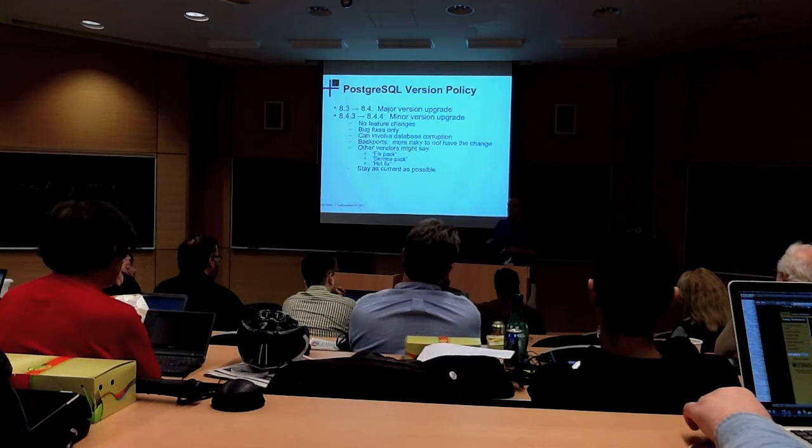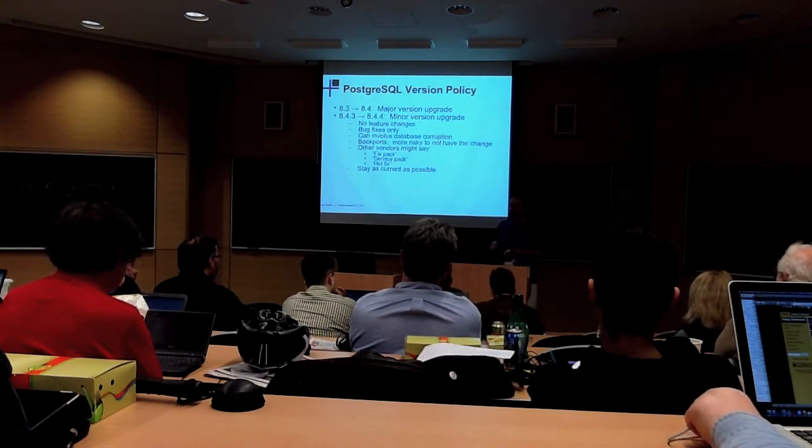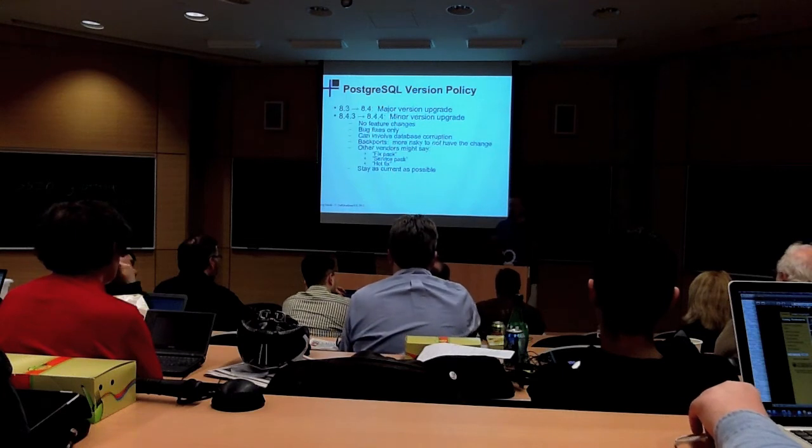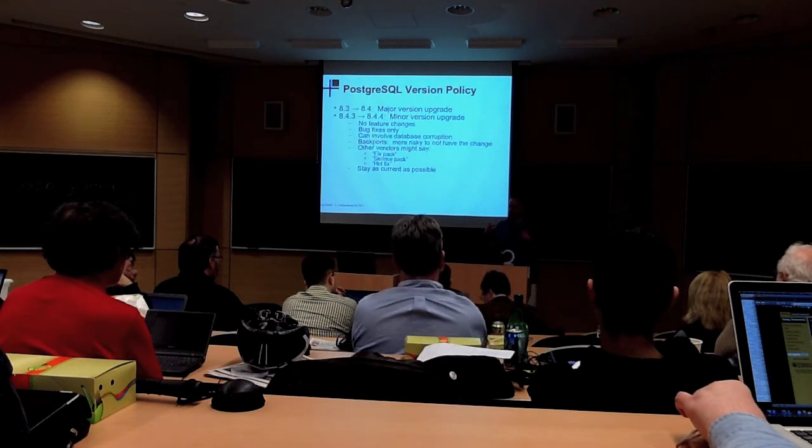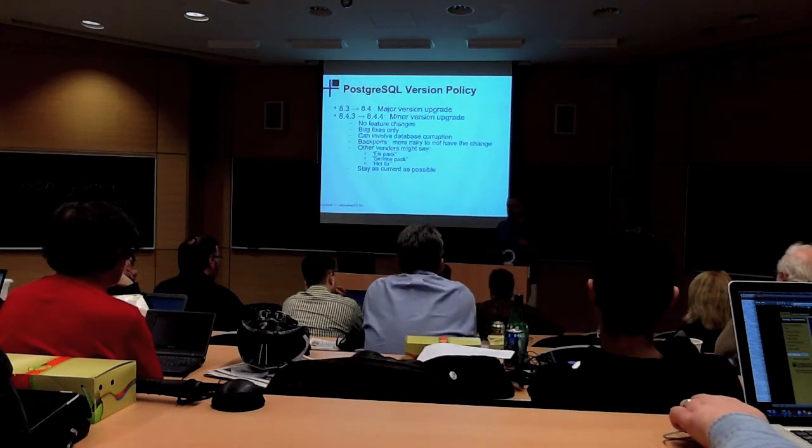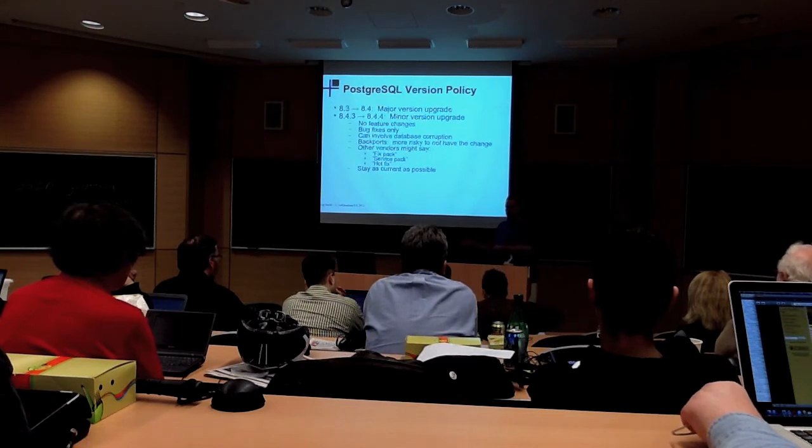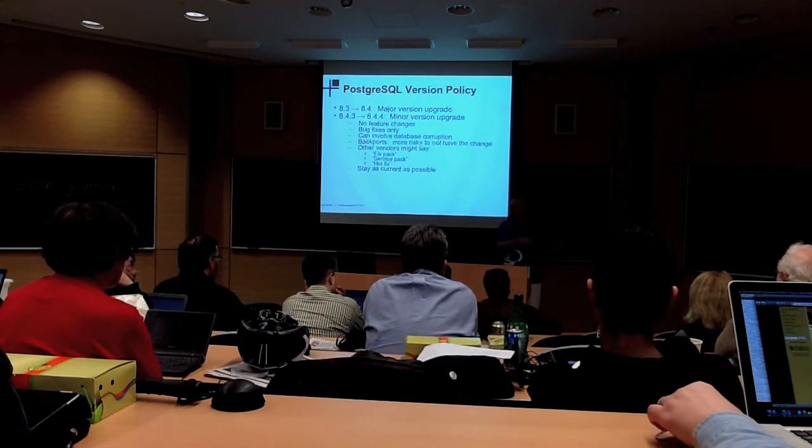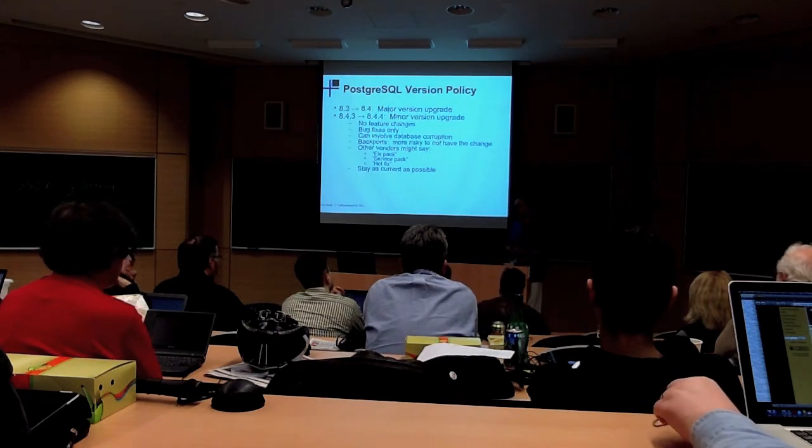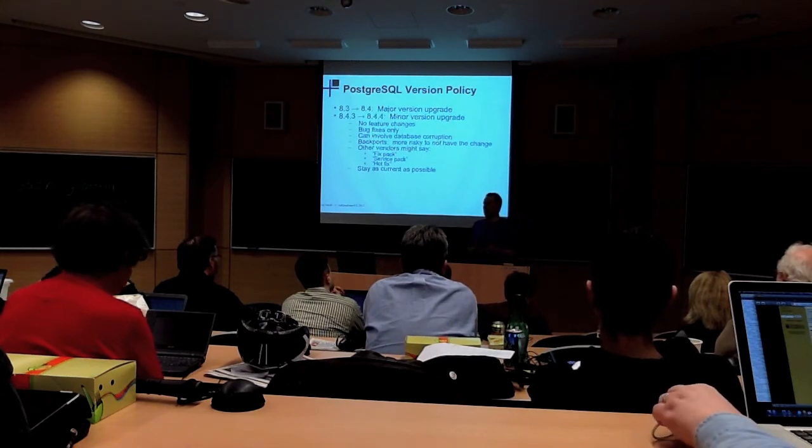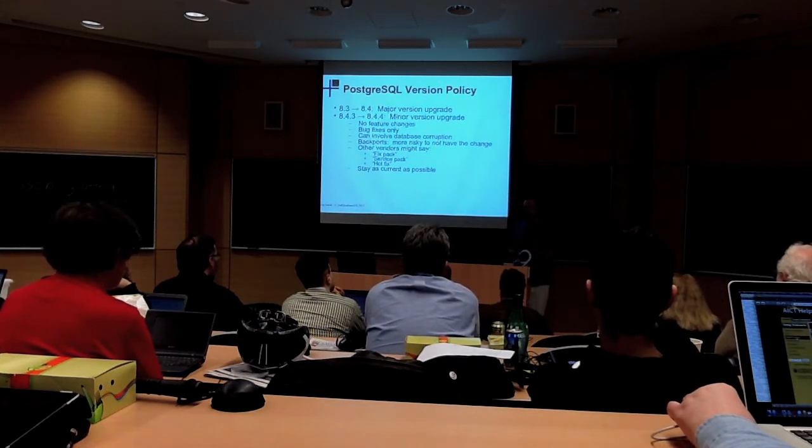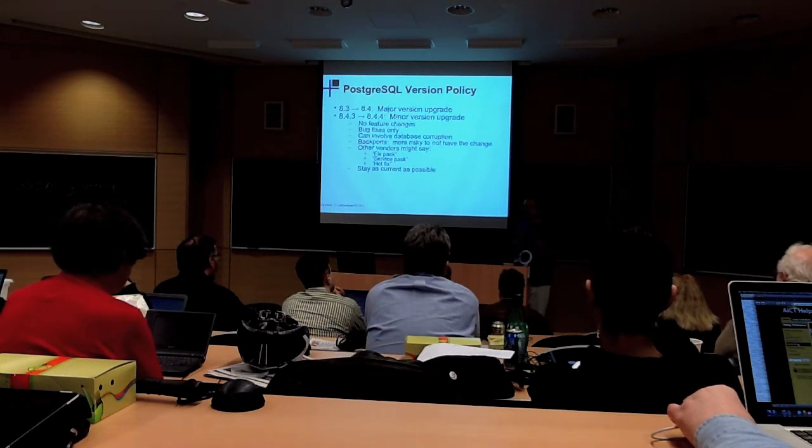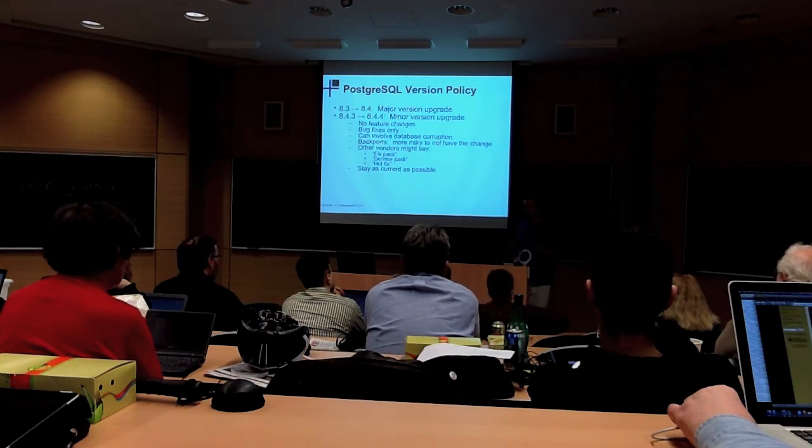These changes are called backports because these changes will start in a newer version of Postgres typically. Like right now, if someone makes a change, it's going to start in 9.1 normally because 9.1 is the development version, and then it gets backported to 9.0, 8.4, 8.3. How far back depends on how far it makes sense for that thing to go into past versions. The idea behind the backport is if it's not really clear whether this makes sense to change or not, the spirit of that guideline is, is it more risky to have this change or to not have this change?